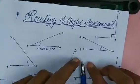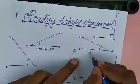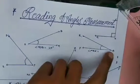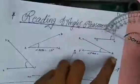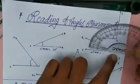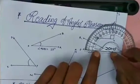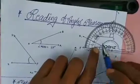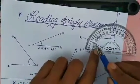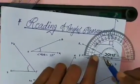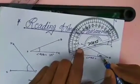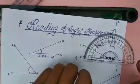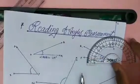Now for angle PQR, we find its degree the same way. The baseline is PQ, and from point Q we place the midpoint of the protractor. After aligning the baseline, ray QR falls on 20 and 160. Since this is an acute angle, we take 20 degrees — not 160, because 160 is an obtuse angle, which is more than 90 degrees. I will explain when to take 160 degrees in the next angle.